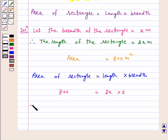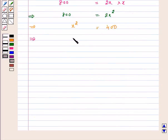This implies 800 equals 2x squared. This implies x squared equals 400. This implies x equals the square root of 400, which implies x equals plus or minus 20.